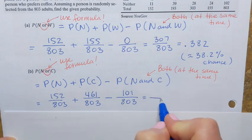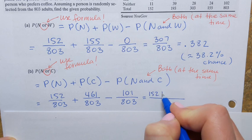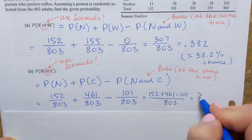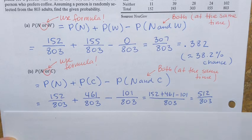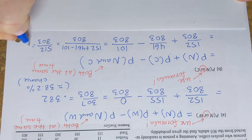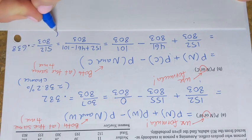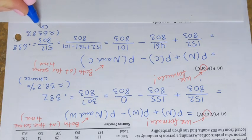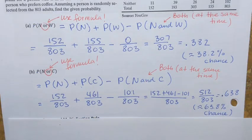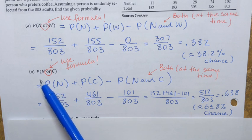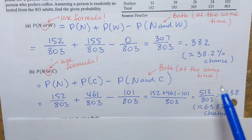To calculate P(N or C): 152 plus 461 minus 101 equals 512, over 803. Converting to a decimal: 512 divided by 803 ≈ 0.638. That is approximately 63.8% — the chance that a randomly selected person from the 803 adults either lives in the northeast or prefers coffee.